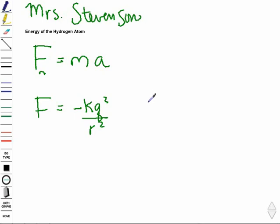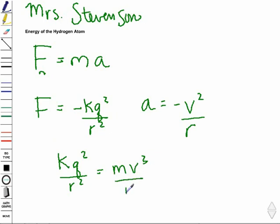Because the electron is moving in a circular orbit, its acceleration can be represented by a negative v squared divided by r, v being the velocity and r again being the radius. So we can plug our force expression in for force, our acceleration expression in for acceleration, and we end up with a new expression of k, q squared, over r squared, equals m, v squared, divided by r.